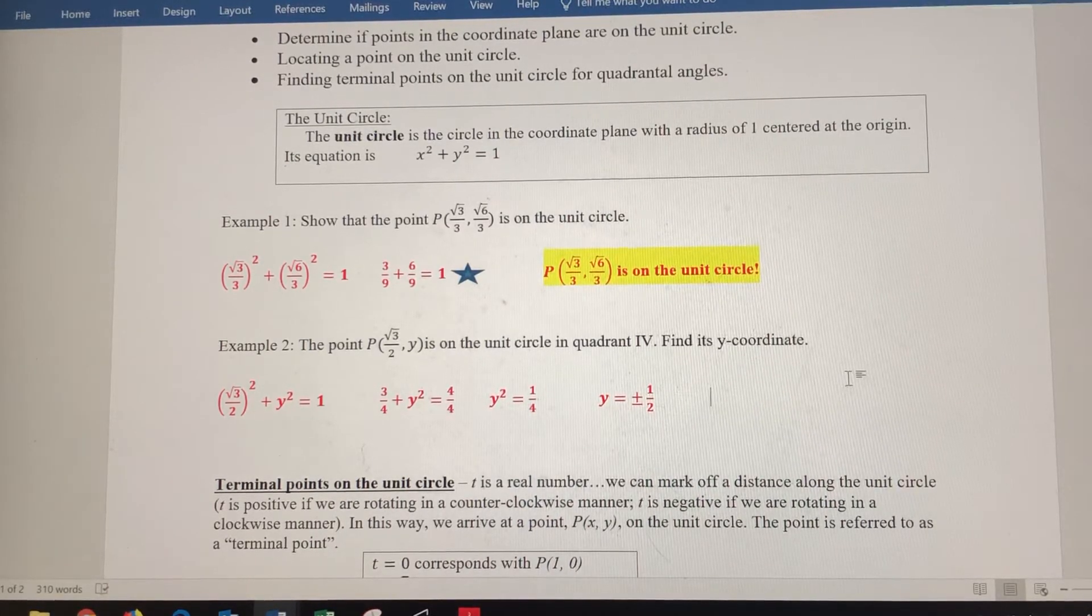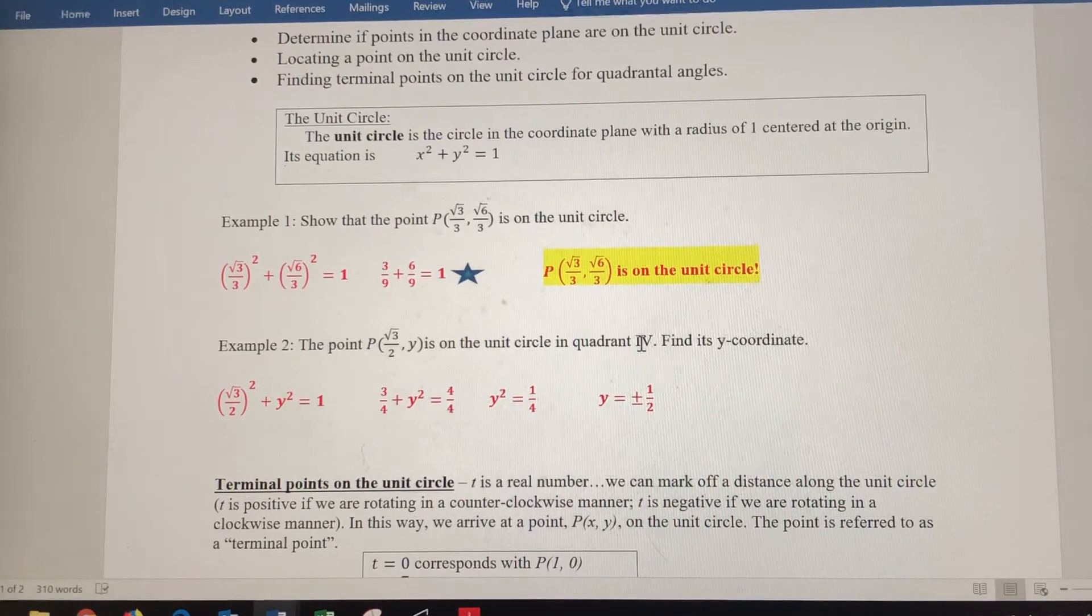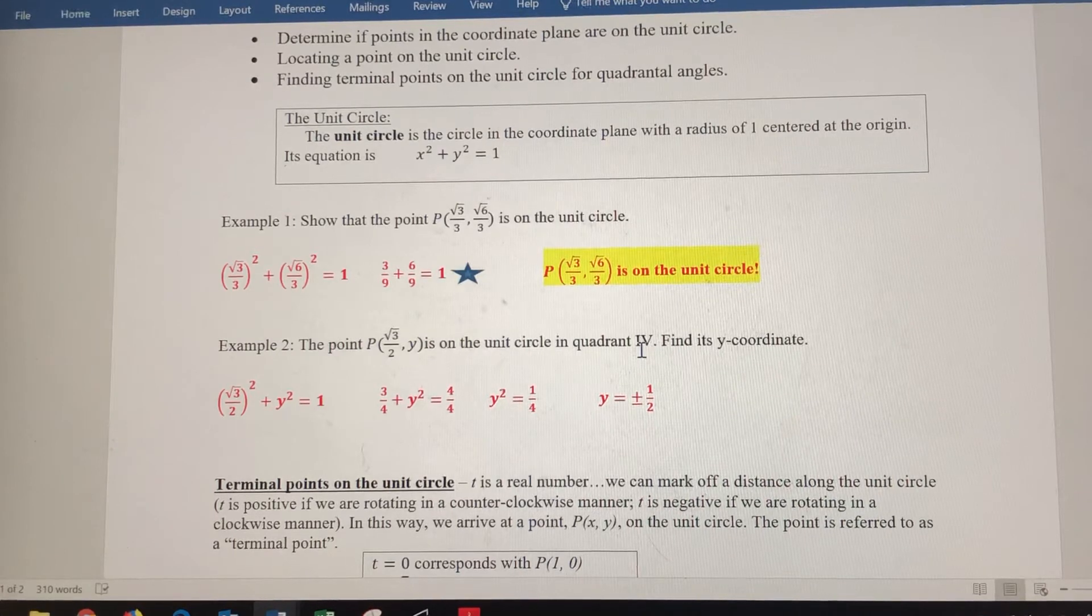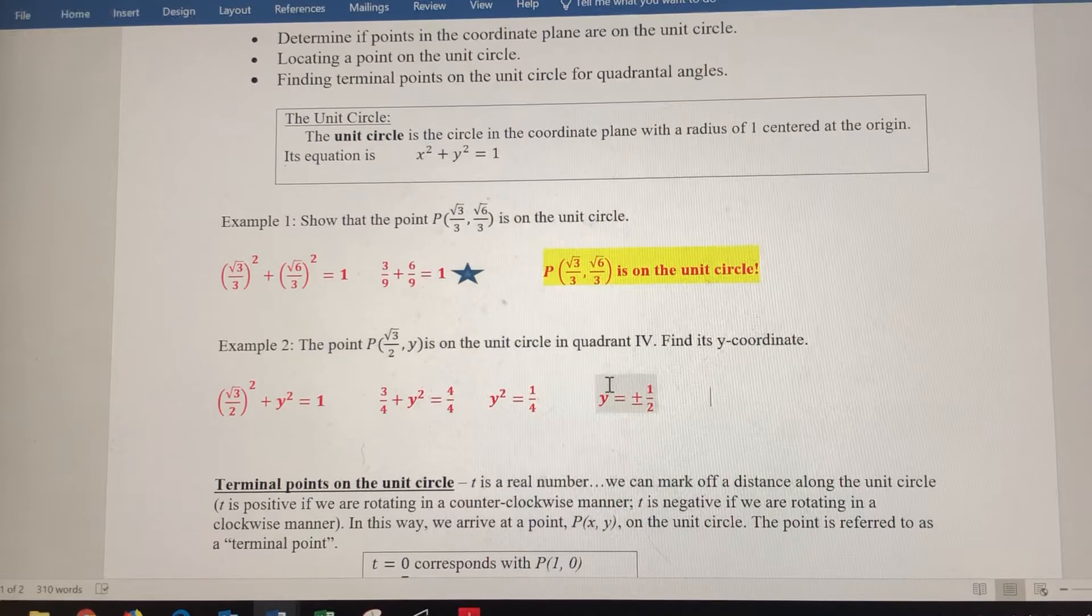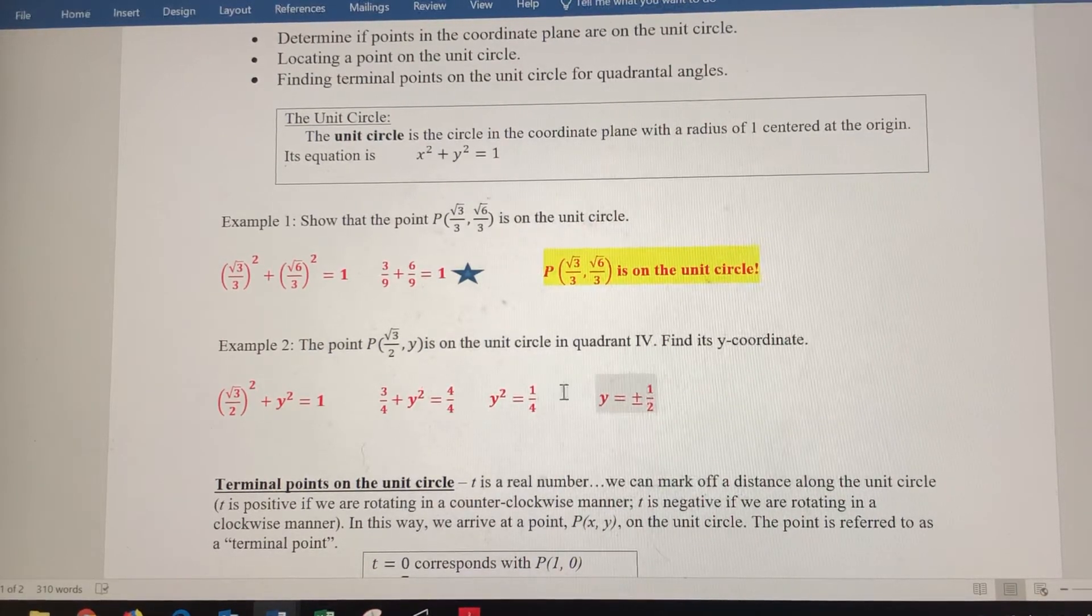Now let's go back to the problem. It said we know that this point is in quadrant 4. In quadrant 4, we are below the x-axis. If we're below the x-axis, that means y has to be a negative 1-half. So we don't need the positive square root of 1-fourth here. We just need the negative 1.